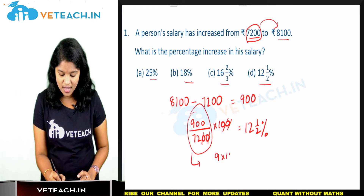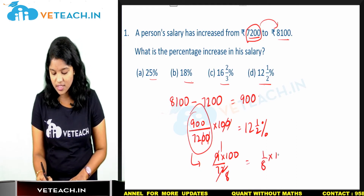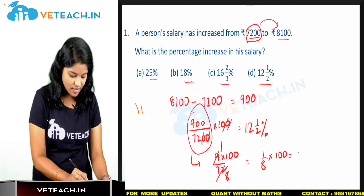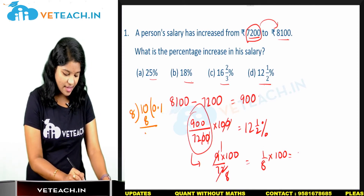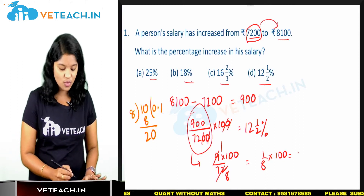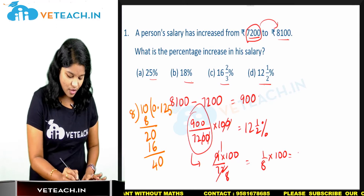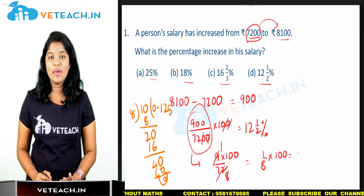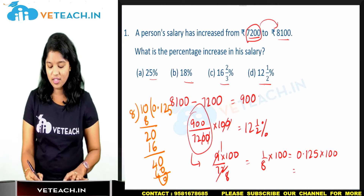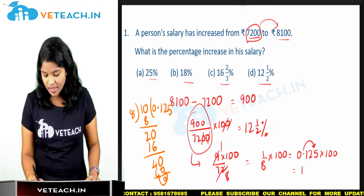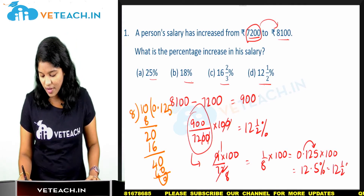To simplify: 900 can be written as 9 × 100 divided by 72. In the 9 times table, 9 goes once into 9 and 72 goes 8 times, so we calculate 1/8 × 100. Dividing 1 by 8 gives 0.125, and multiplying by 100 moves the decimal two places to the right, giving 12.5%. So 12.5% equals 12½%, which is our answer.